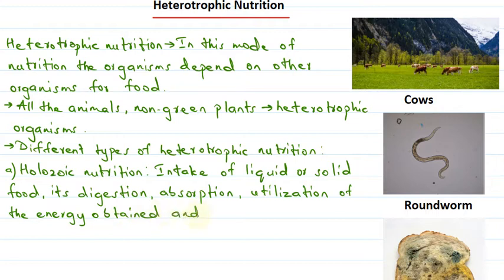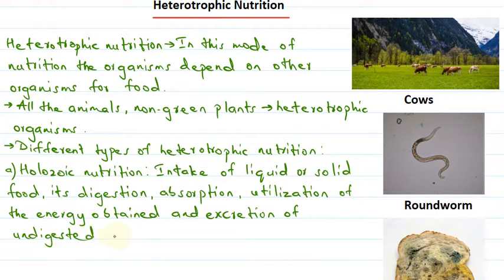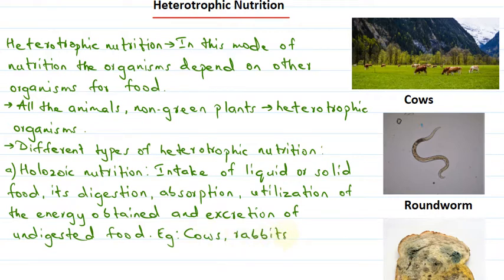Then there is excretion of undigested food — the undigested waste products. For example, holozoic nutrition can be seen in animals like cows, buffaloes, rabbits, and also in human beings.